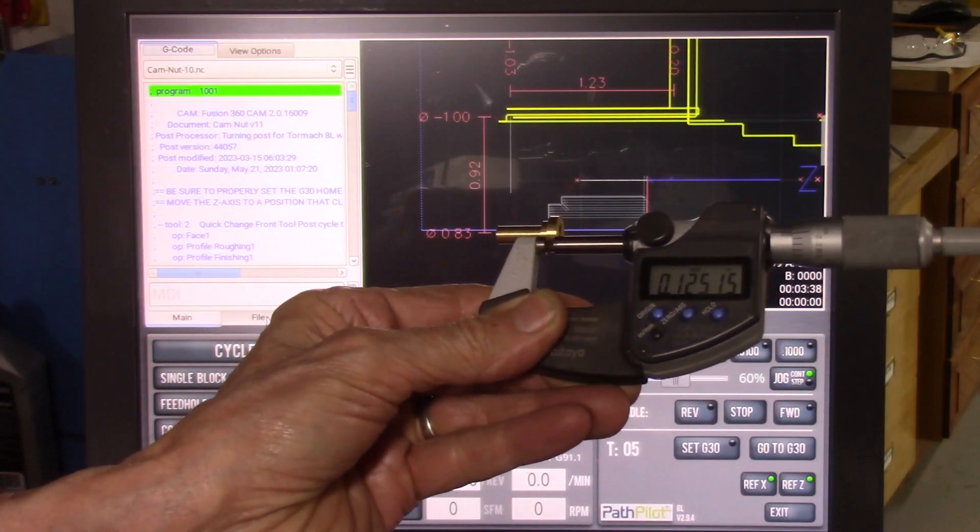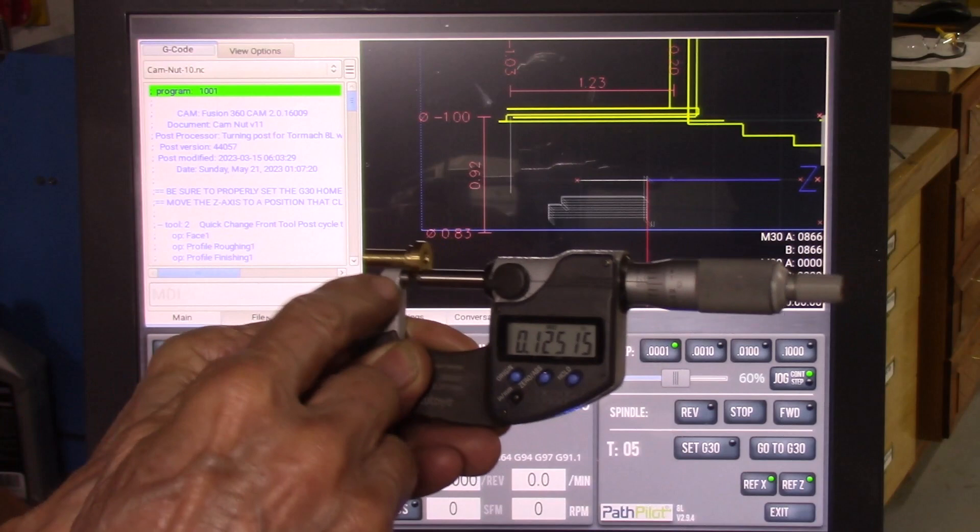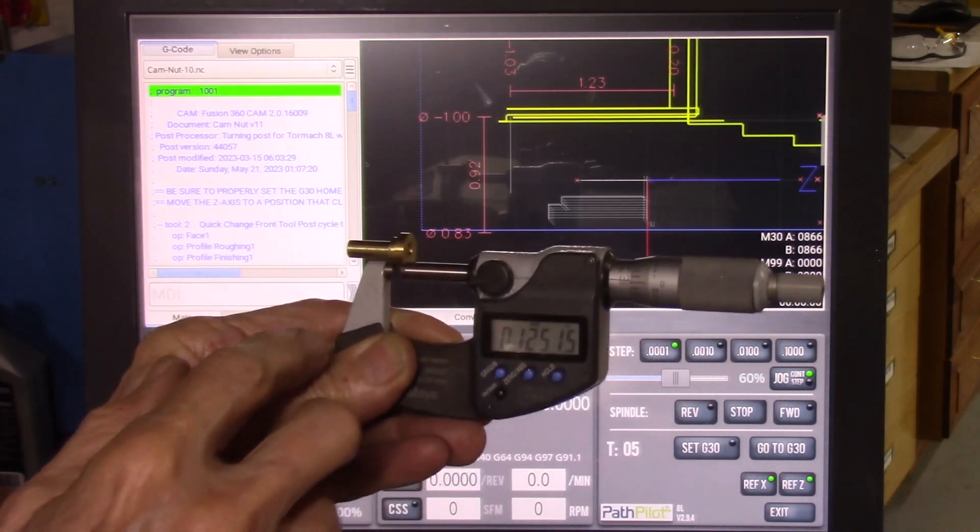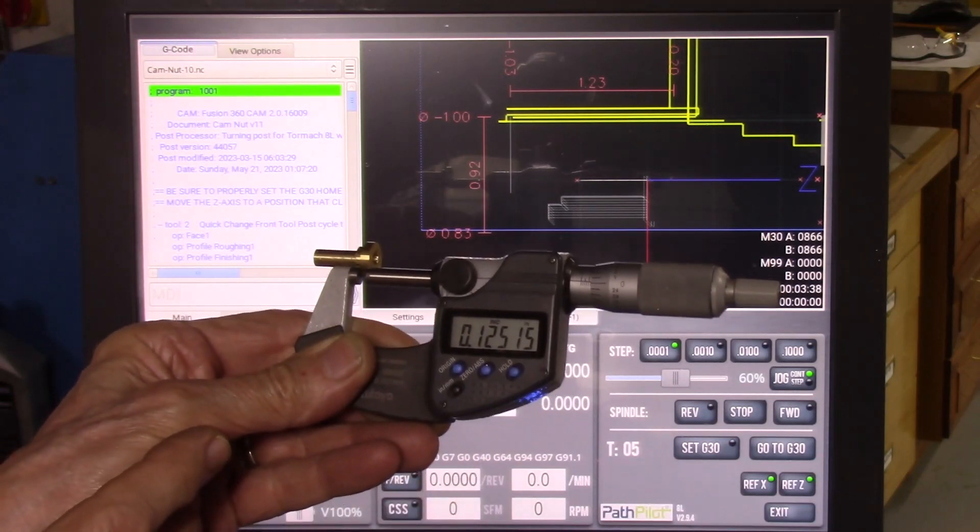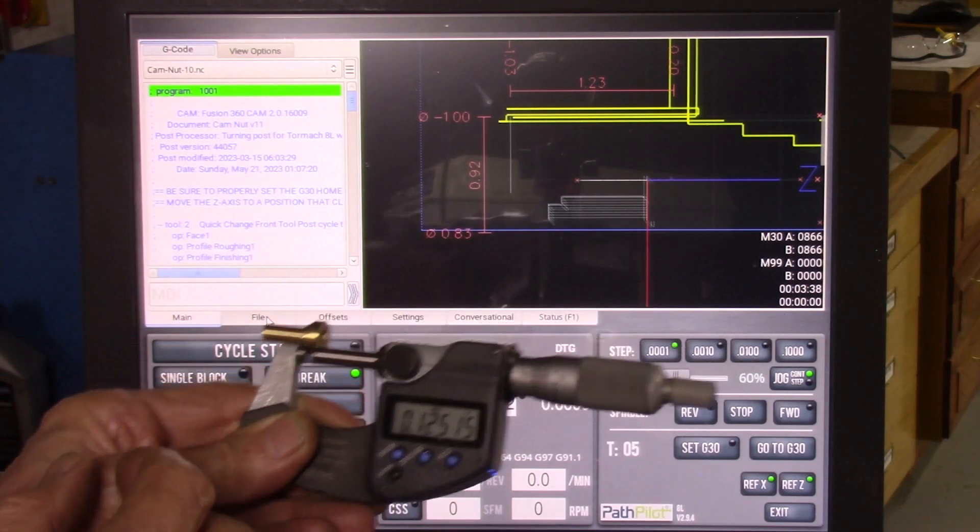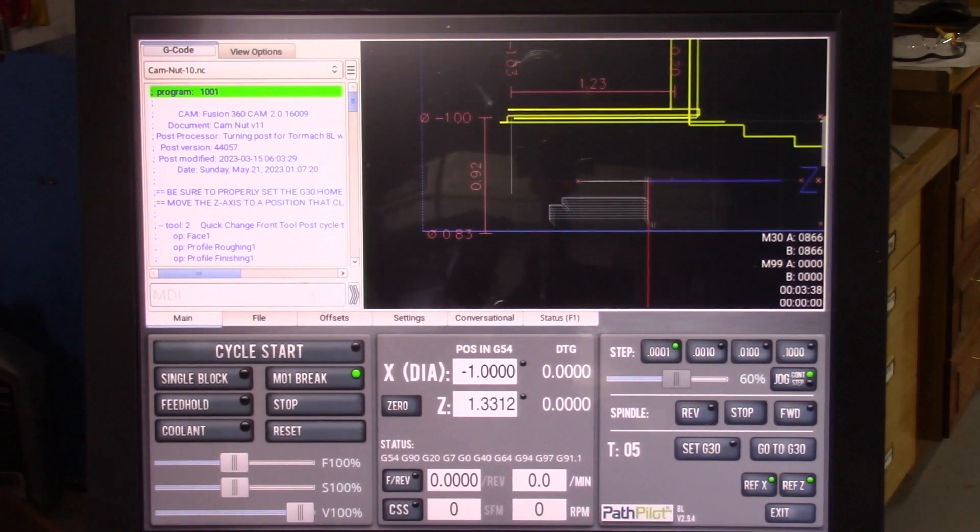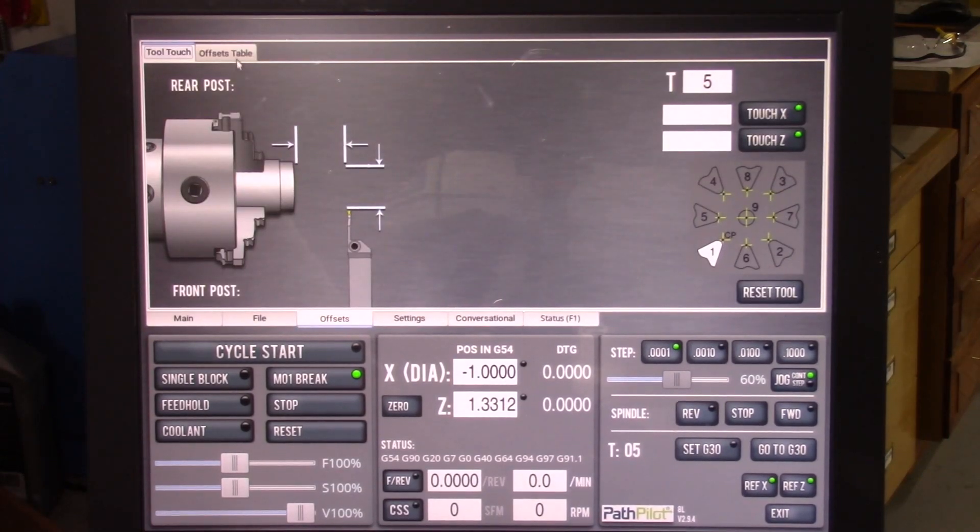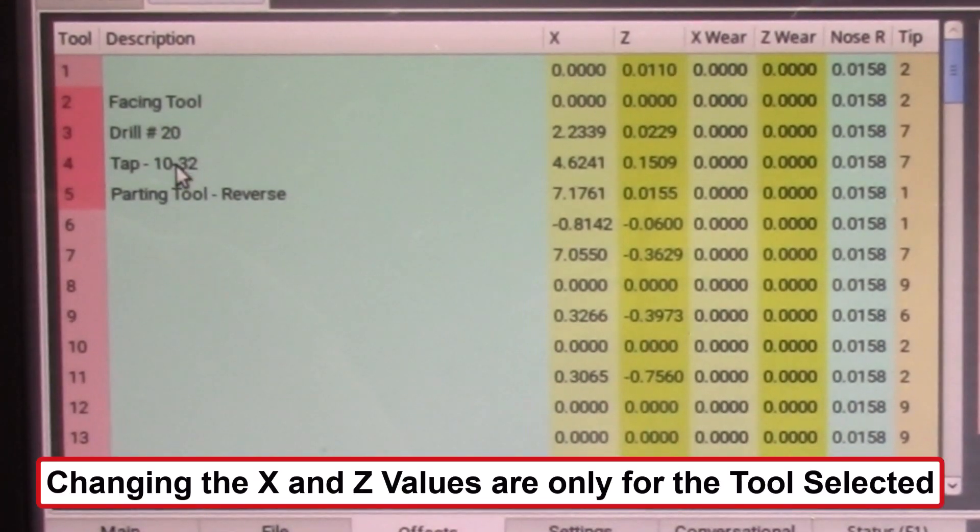Another issue that may come up is maybe one of your dimensions for one of your tools is off. For instance, my end of this piece is supposed to be 0.125 inches and it's about a thousandth, a thousand and a half oversize. So I need to reduce that length by adjusting my parting tool. So in this system I use four tools. So I go to my offset pages, and if I go to the offset table, you see I have the four tools, my facing tool, my two drills, and my parting tool. And these tools are fine, I don't need to change them, but my parting tool, I want to change that dimension.